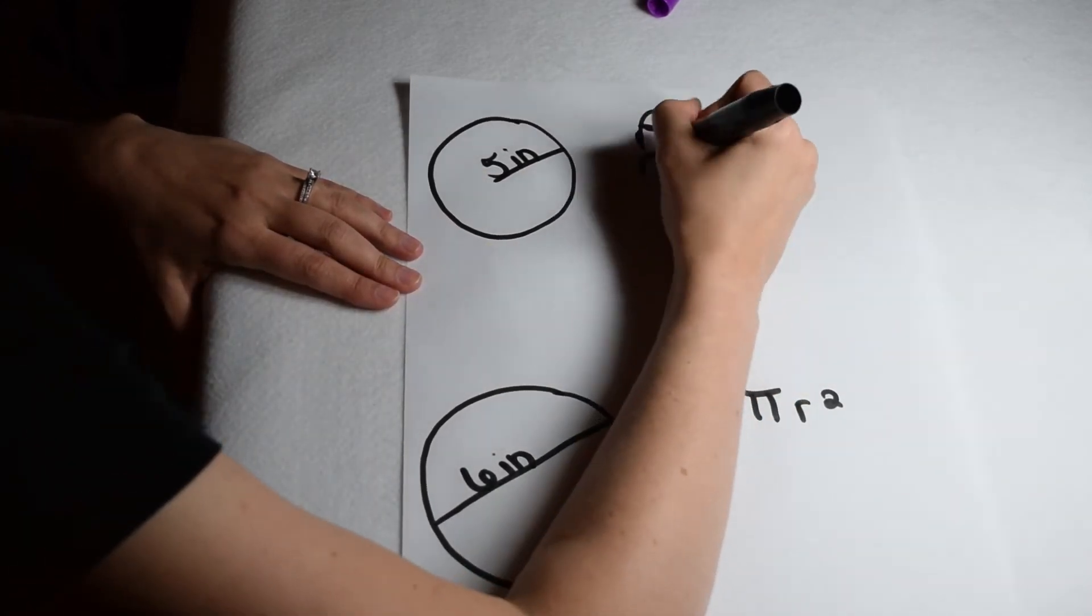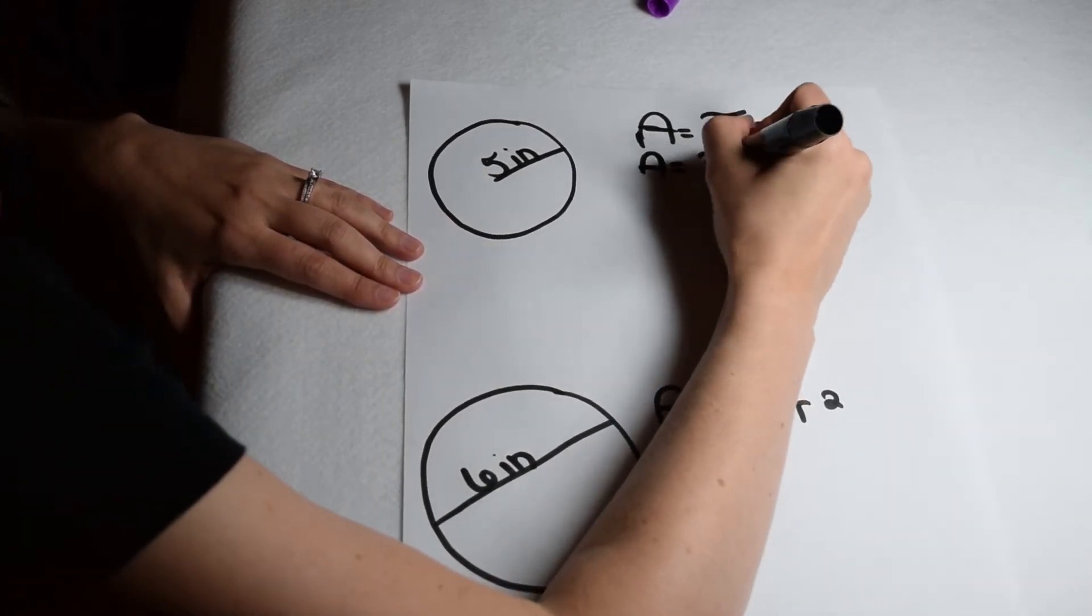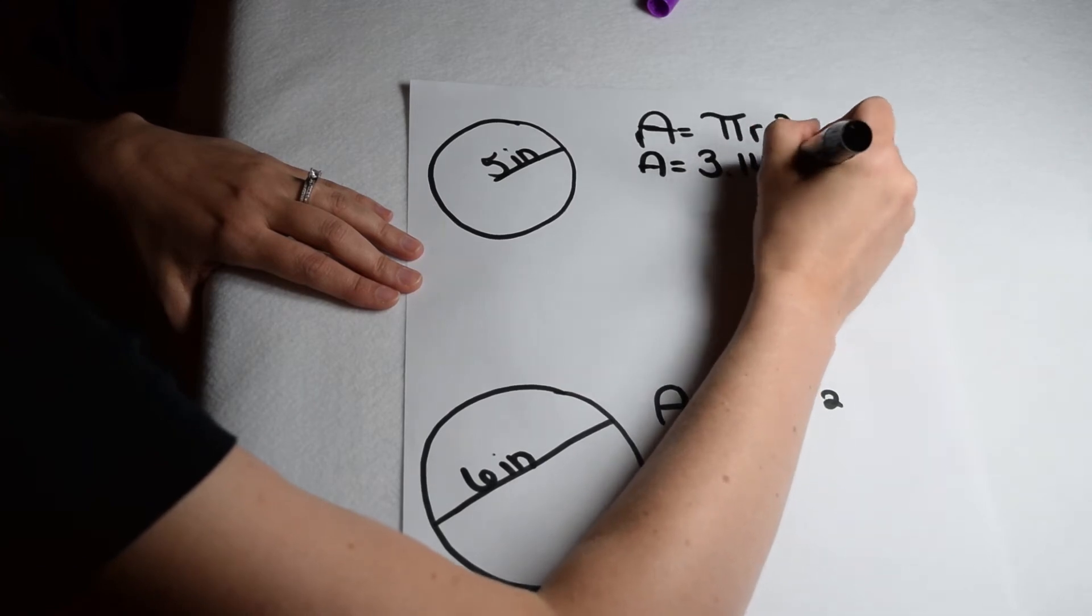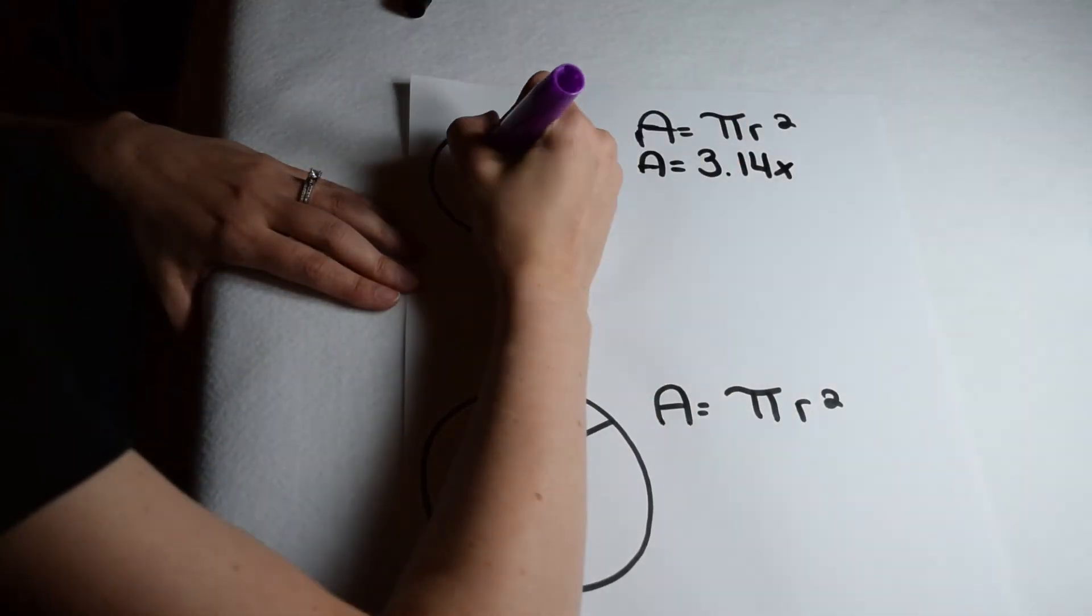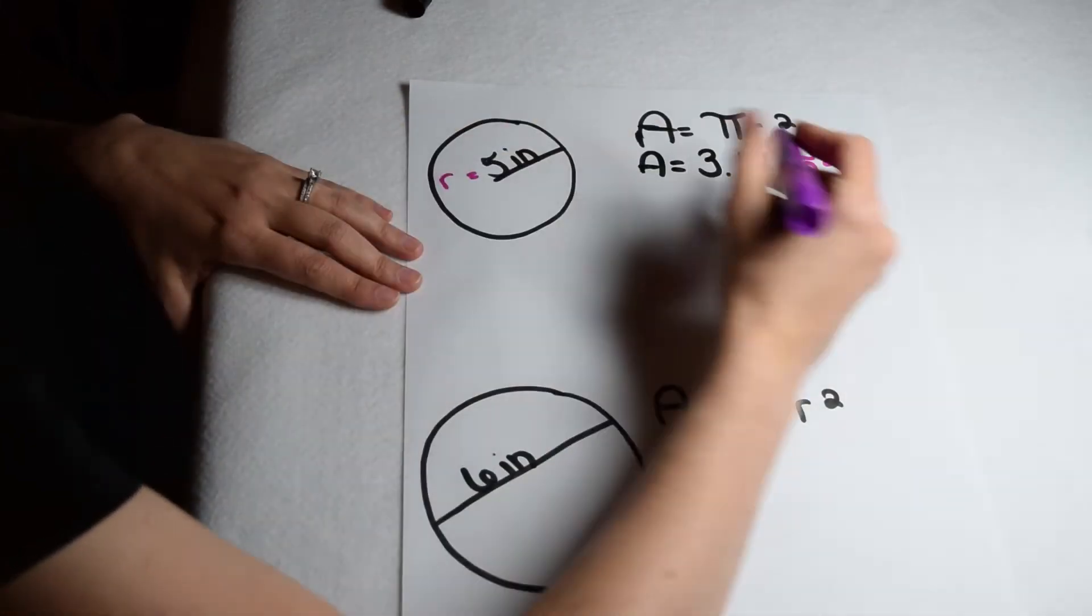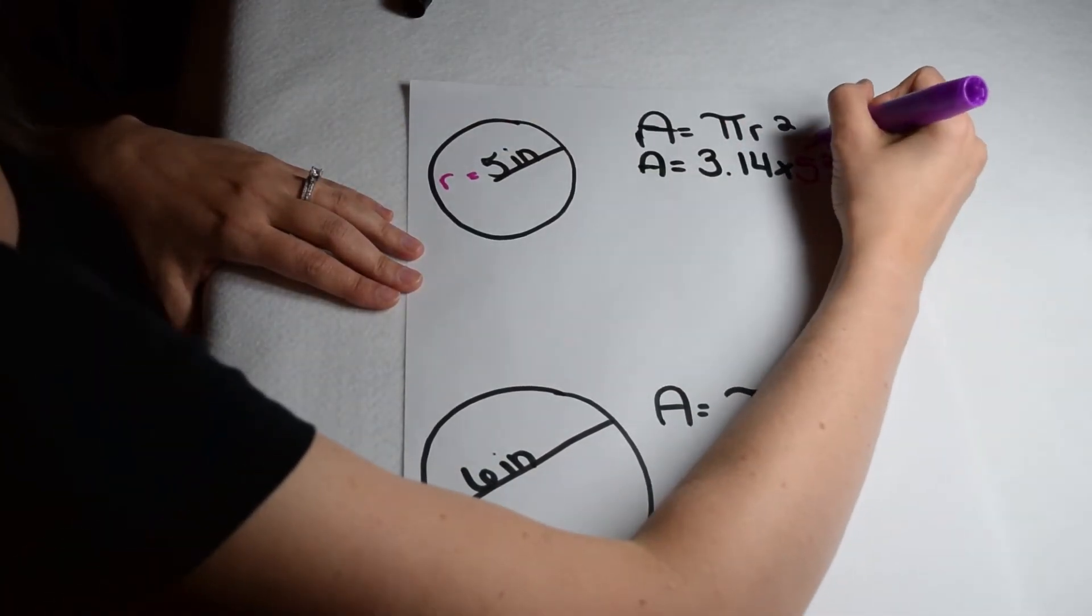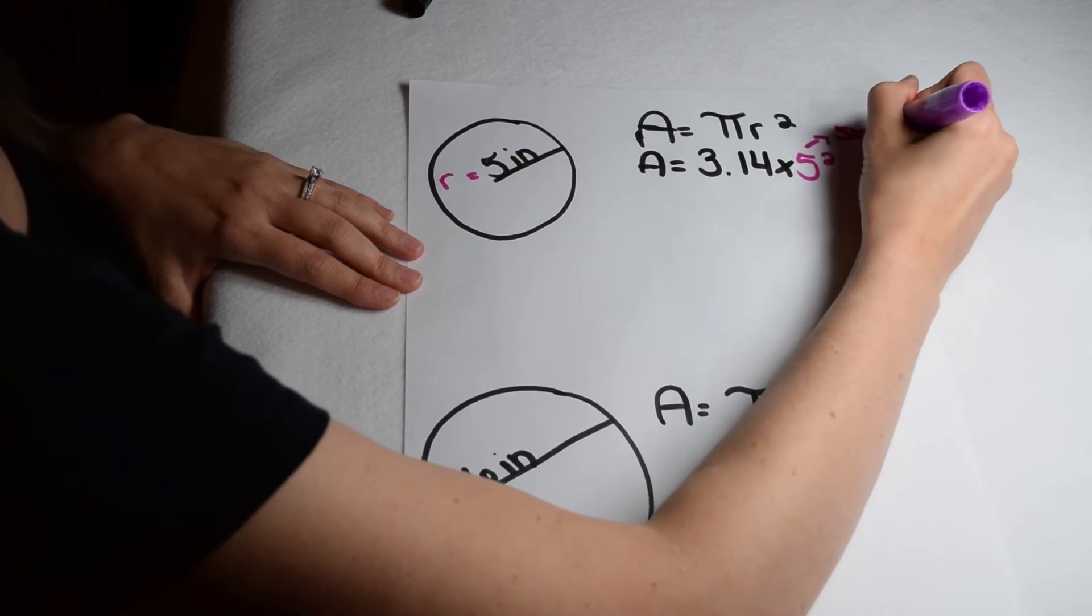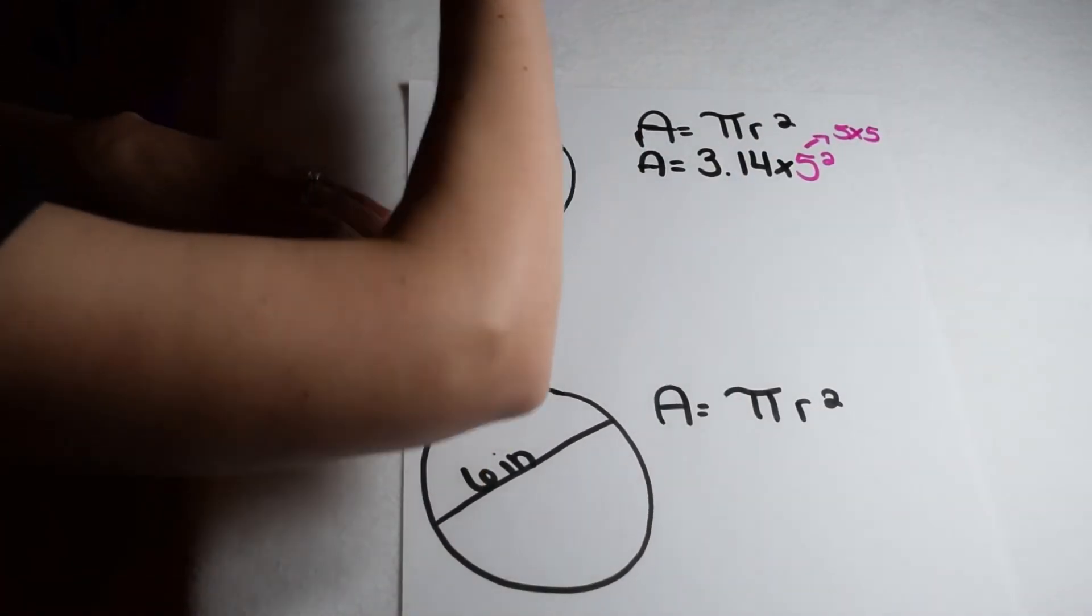We know our equation for finding area of a circle is pi times radius squared. For pi, we're going to use 3.14. We have a radius of 5 inches, so we're going to solve 5 squared. Remember when we're solving an exponent, we're multiplying the number times itself. So 5 squared means we need to solve 5 times 5.